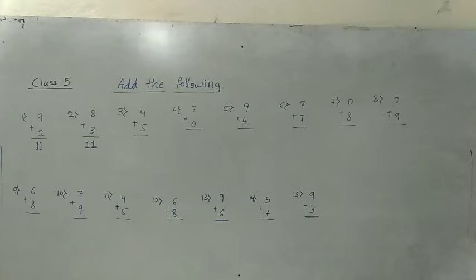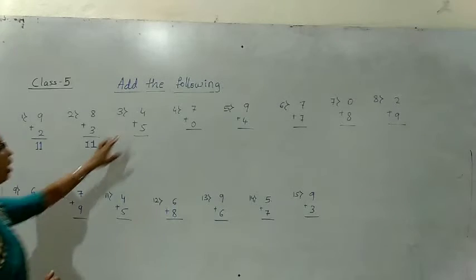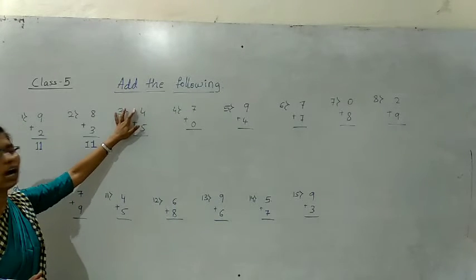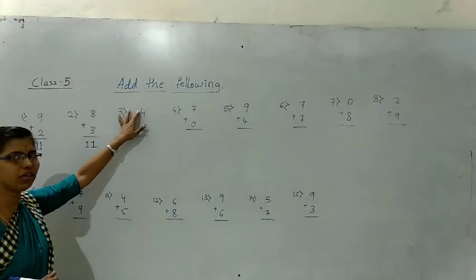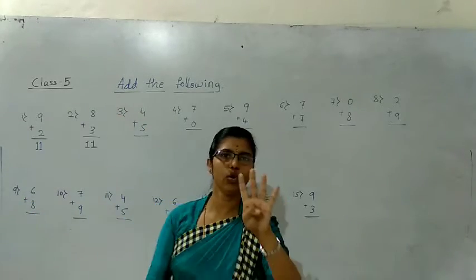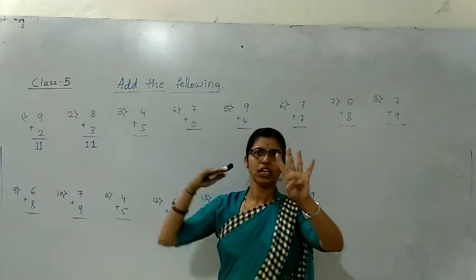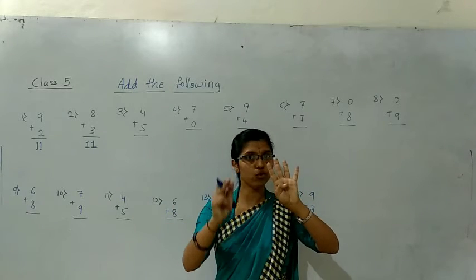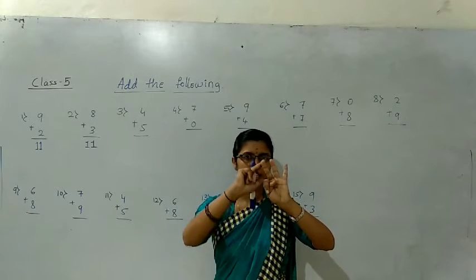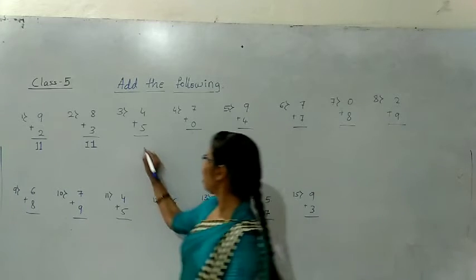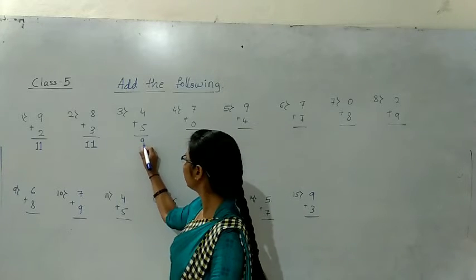Now see the third question: 4 plus 5. We should hold the upper number — how much is that? 4. The below number is 5. After 5, you should count: six, seven, eight, nine. The answer is 9.